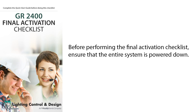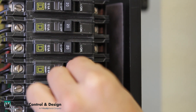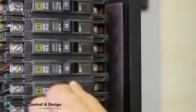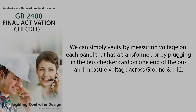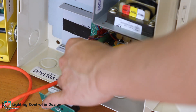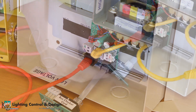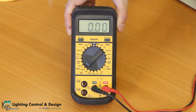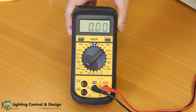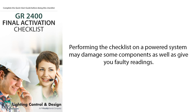Before performing the final activation checklist, ensure that the entire system is powered down. We can verify by measuring voltage on each panel that has a transformer, or by plugging in the bus checker card on one end of the bus and measuring voltage across ground and plus 12. Performing the checklist on a powered system may damage some components, as well as give you faulty readings.